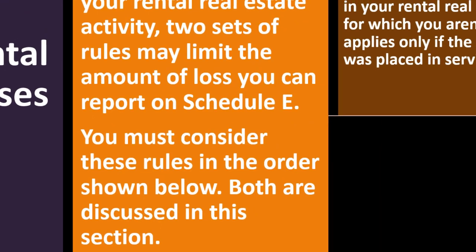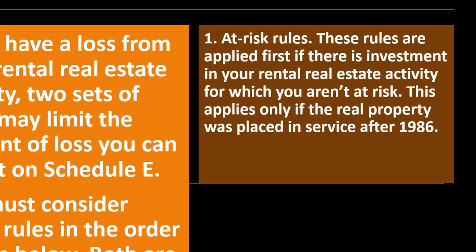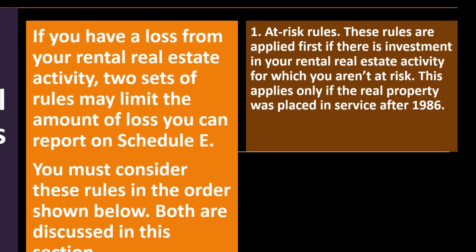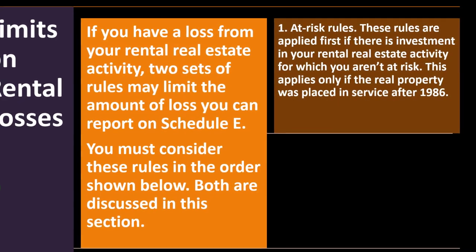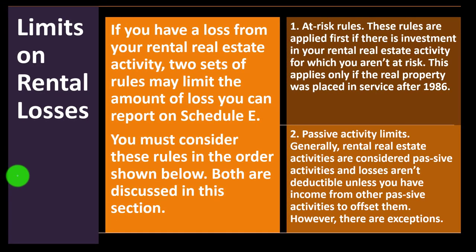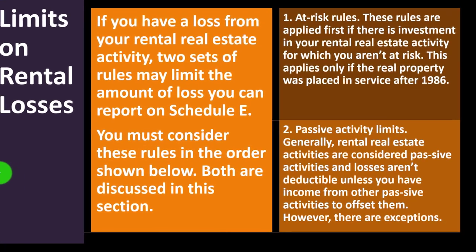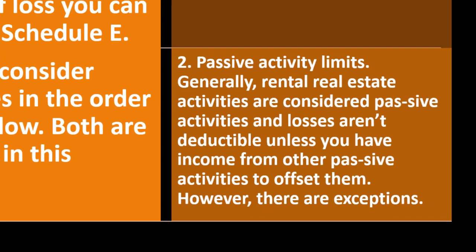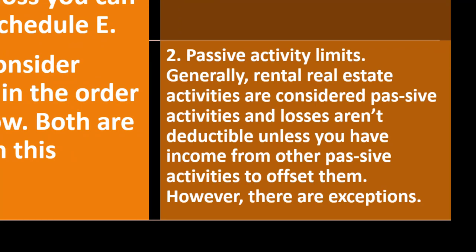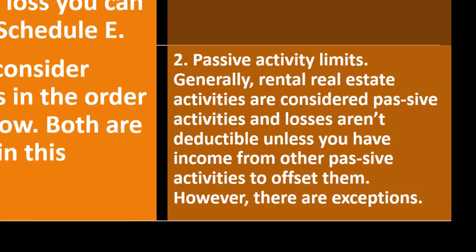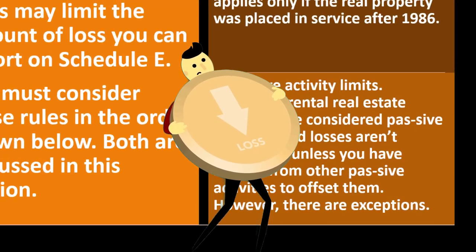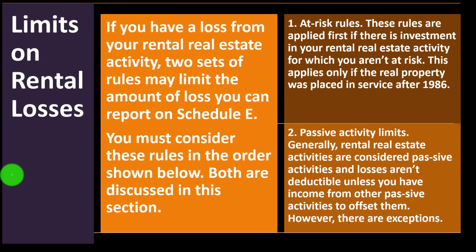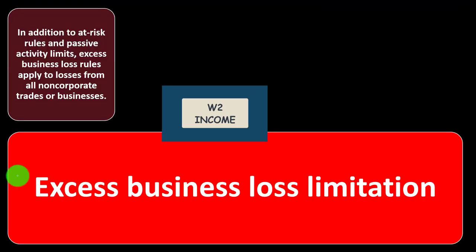You must consider these rules in the order shown. Number one: the at-risk rules. These are applied first if there is investment in your rental real estate activity for which you aren't at risk. This applies only if the real property was placed in service after 1986. Number two: the passive activity limits. Generally, rental real estate activities are considered passive activities, and losses aren't deductible unless you have income from other passive activities to offset them — not active income such as W-2 income.